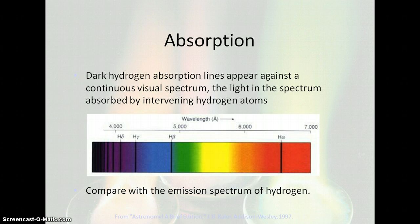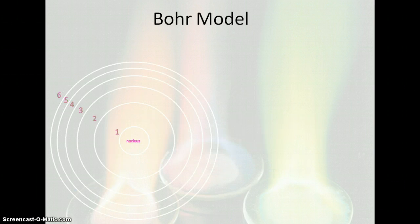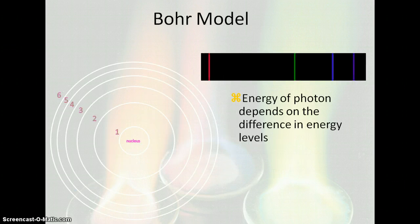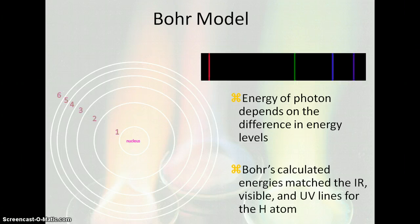Here's our absorption spectra. These are the energies where we have the black lines — the energies for the transitions in hydrogen that are absorbed by the atom. And then the emission spectra shows you what specific wavelengths of light are emitted when the electron moves from the excited state back to the ground state.